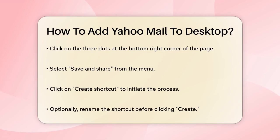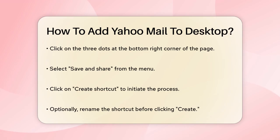Since there isn't a dedicated Yahoo Mail app for Windows, we'll create a shortcut instead. Look for the three dots at the bottom right corner of the page and click on them. From the menu, select Save and Share and then click on Create Shortcut. Here, you can choose to rename the shortcut if you want, but for now just click Create.